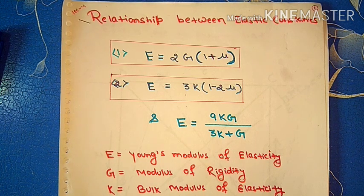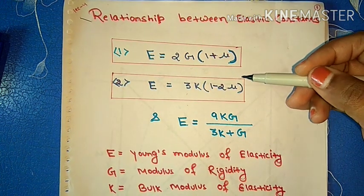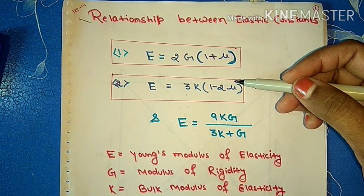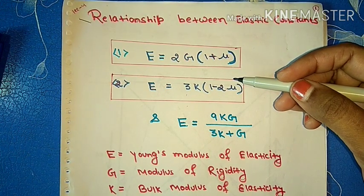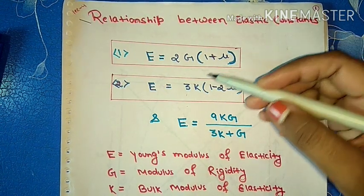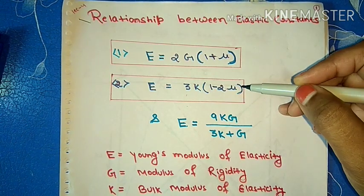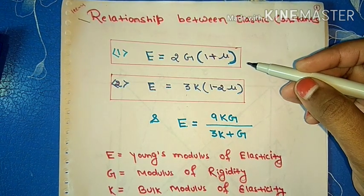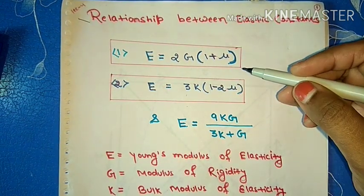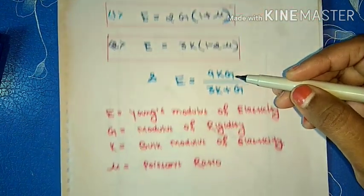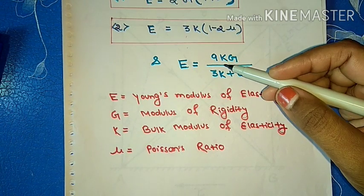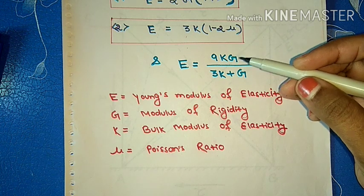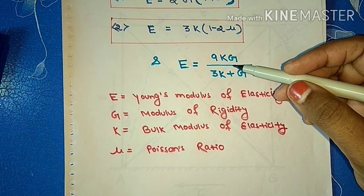Good morning all of you. We are going to start a new lecture on Strength of Materials. In the last class, we proved the relationship between elastic constants E, G, K and mu. That is E equal to 2G(1 plus mu) and E equal to 3K(1 minus 2mu) for a deformable cubical element. Here in this video, we are going to see the relationship between E, K and G, and also discuss some important points regarding competitive examinations. So let's get started.